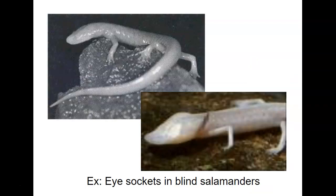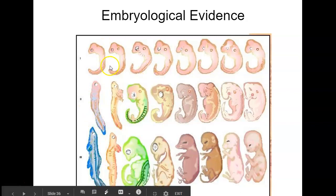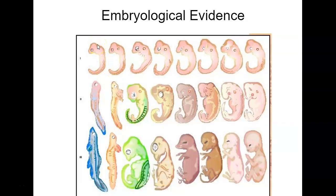Another interesting vestigial structure would be eye sockets in salamanders that are blind — you wonder why they'd have eye sockets if they can't see. For embryological evidence, organisms are compared from top to bottom: on the left, a fish, then a salamander, turtle, chick, hog, cat, rabbit, and human. At the very early stage, everything pretty much looks the same. In the middle stage, we start to get some differences, but many pieces are still similar. As it further develops, you can see even more differences. So looking at early embryology suggests that we all came from something similar.